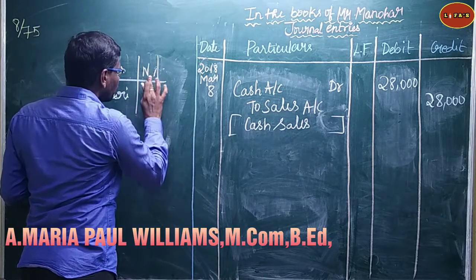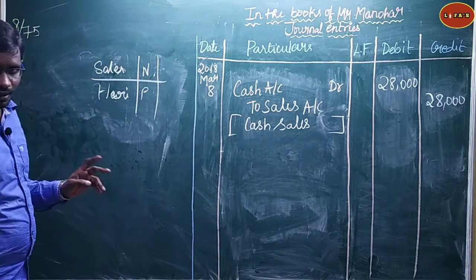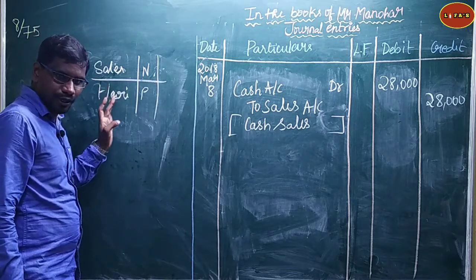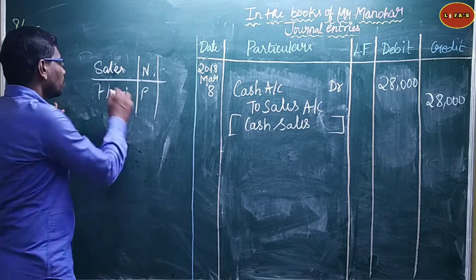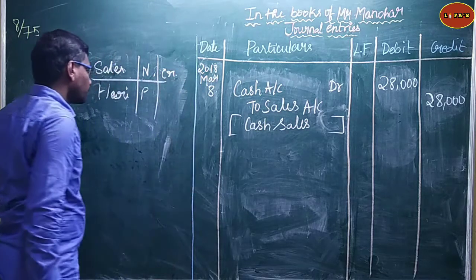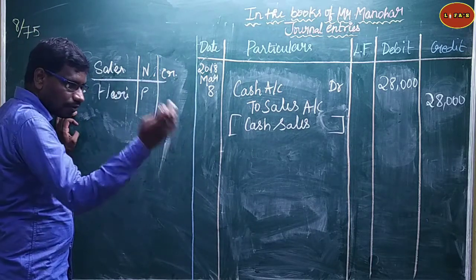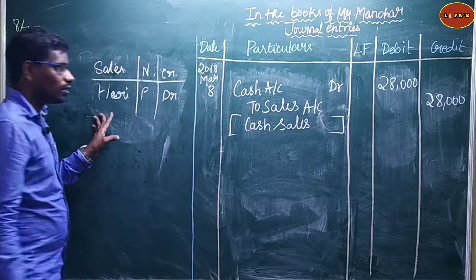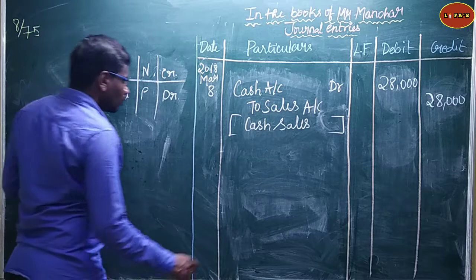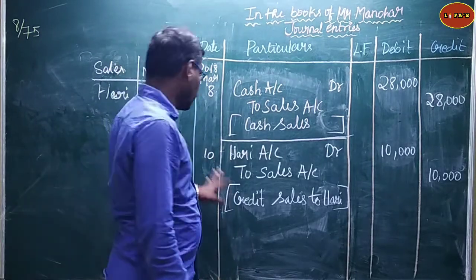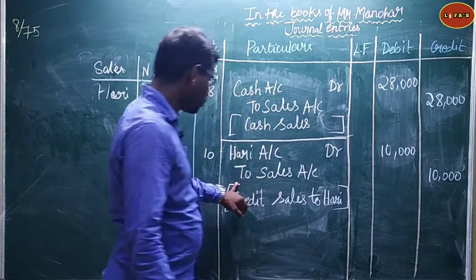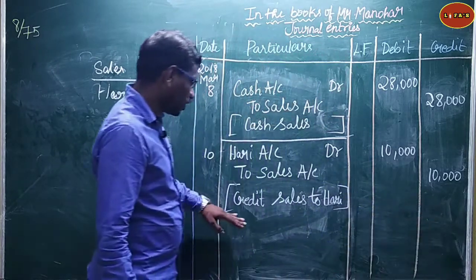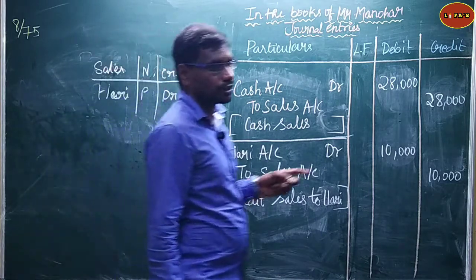Sales is a nominal account. Nominal account rule: debit all expenses and losses, credit all income and gains. Sales is income, so credit sales. March 10: Harry bought goods on credit. Harry is a personal account — personal account rule: debit the receiver, credit the giver. Harry is the receiver, so Harry is debited. Journal entry: Harry's Account Dr. to Sales Account — rupees 10,000. Narration: Sold goods to Harry on credit.